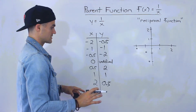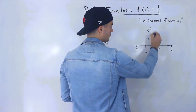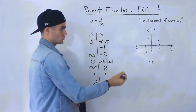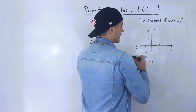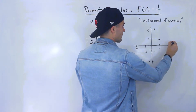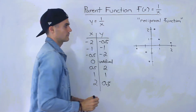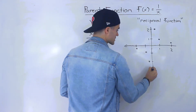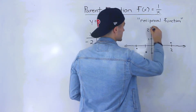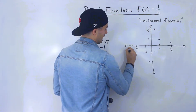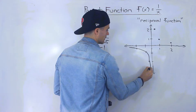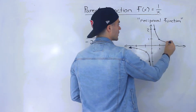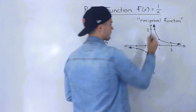0 is undefined so let's skip that. We got 0.5 and 2, 1 and 1, and then 2 and 0.5. So kind of weird looking dots here, a weird looking shape for this graph. But when you connect them, it's going to look like this — you're going to have this part of the graph in one quadrant and then this part in another quadrant.